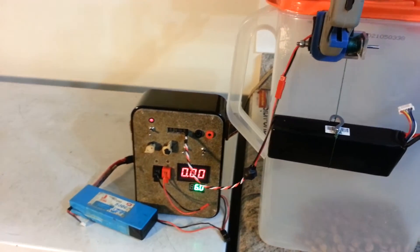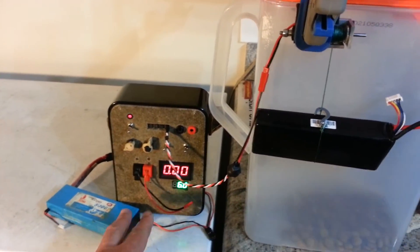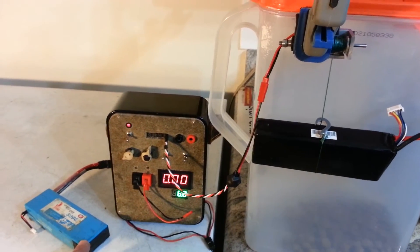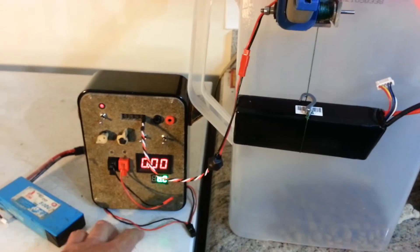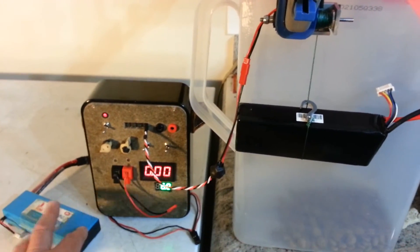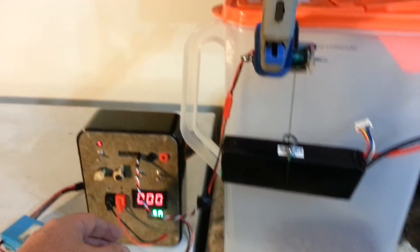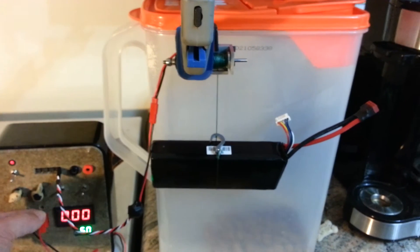It's running from my servo tester. It happens to be running on 6 volts. You can see 6 on the meter down there. It's just going through a BEC from my 2S LiPo. That doesn't matter though. What you want to see is the winch work.